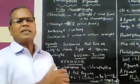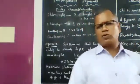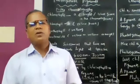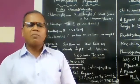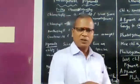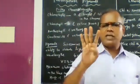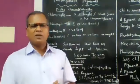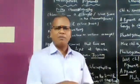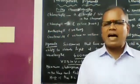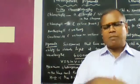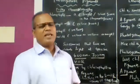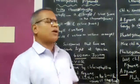In plants, the main pigments are chlorophylls, carotenoids, and phycobillins (phycobilinase). Chlorophylls include types A, B, C, D, and E. Carotenoids include carotene, xanthophyll, alpha-carotene, and beta-carotene. Phycobillins include phycoerythrin and phycocyanin.